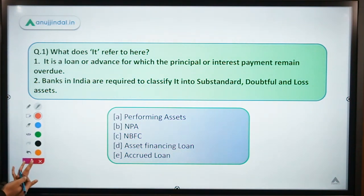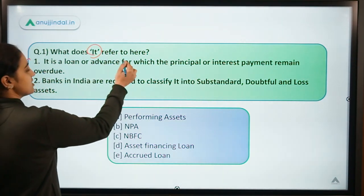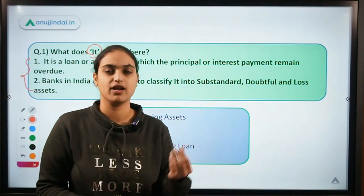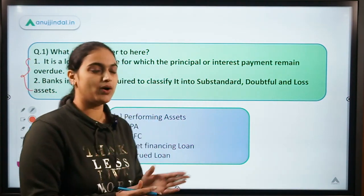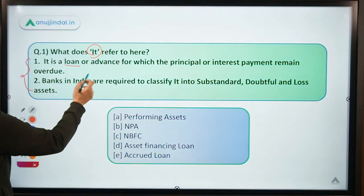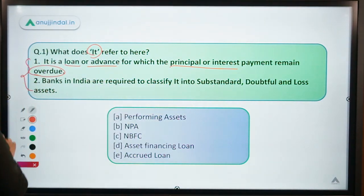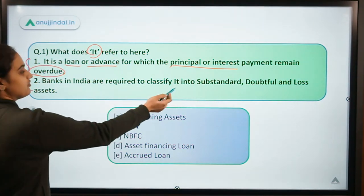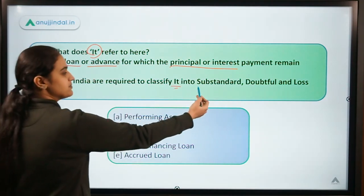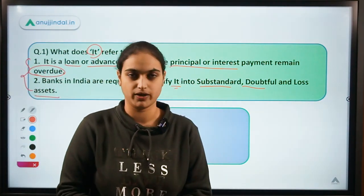Let's get started. The first question shows two statements and asks us to identify the concept being discussed. The first statement says: it is a loan or advance for which the principal or interest payment remains overdue. The second statement says: banks in India are required to classify it into substandard, doubtful and loss assets. So what is the concept being talked about here?